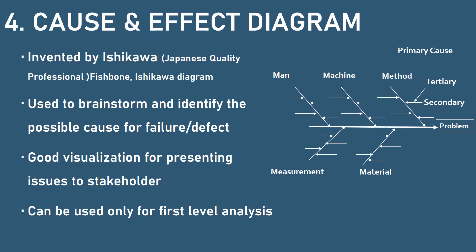The next tool is the cause and effect diagram. It was invented by Ishikawa, a Japanese quality professional, and is also called the fishbone diagram or Ishikawa diagram. It is used to brainstorm and identify possible causes for failures and defects. It is a good visualization method for presenting data to stakeholders, but it can only be used for first-level analysis. After collecting the possible causes using this tool, you have to proceed with data collection and conclude the causes further.